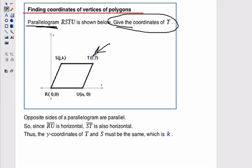So we've got to figure out what coordinates those are. Notice that we have some variables in place of some of the coordinates, so it's not all just going to be numbers. R is (0,0), so it's starting at the origin. Keep in mind, it's important to remember, opposite sides of a parallelogram are parallel.